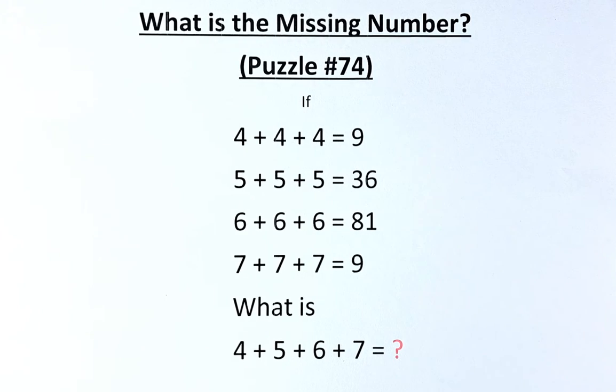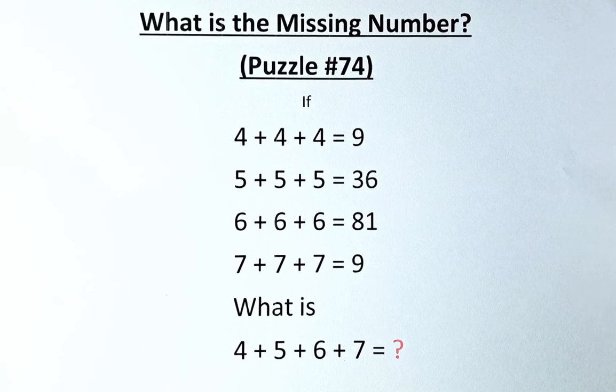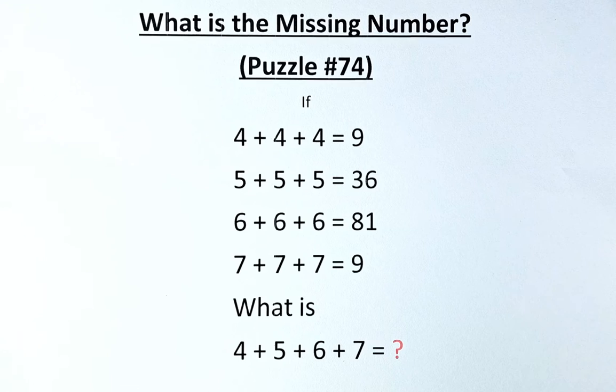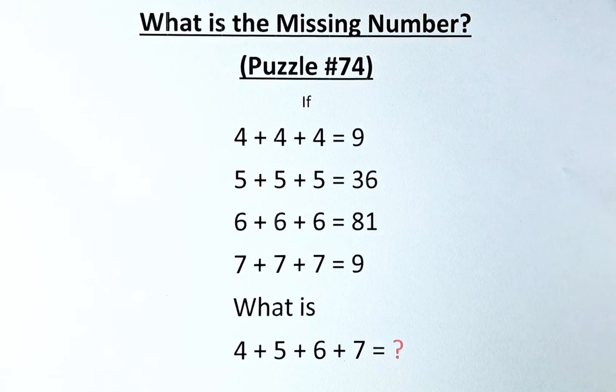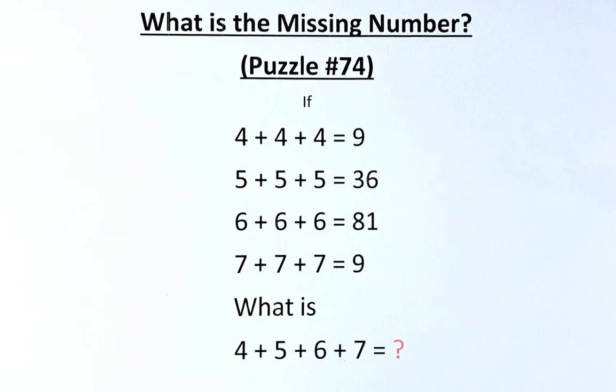Welcome back to the solution of puzzle number 74. The numbers in the puzzles are if 4 plus 4 plus 4 equals to 9, 5 plus 5 plus 5 equals to 36, 6 plus 6 plus 6 equals to 81, and 7 plus 7 plus 7 equals to 9, what then is 4 plus 5 plus 6 plus 7 equals to?